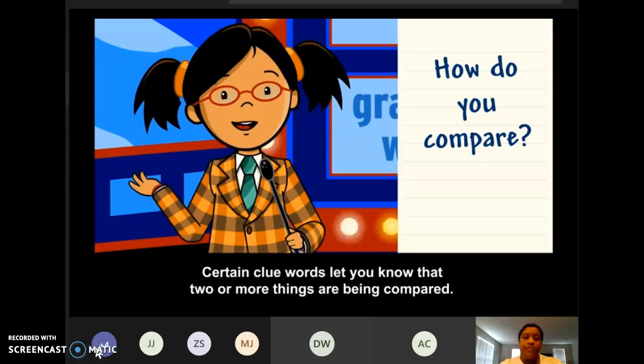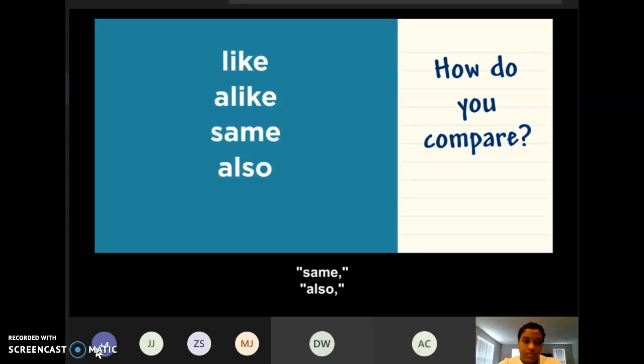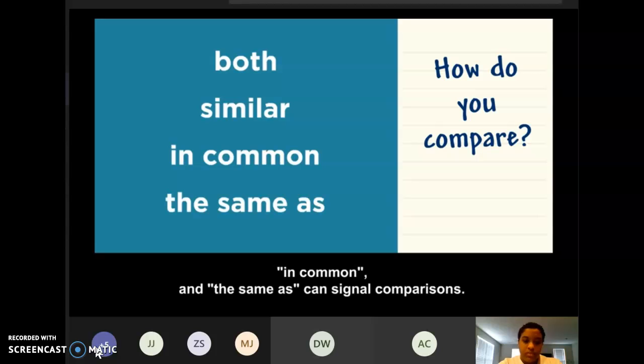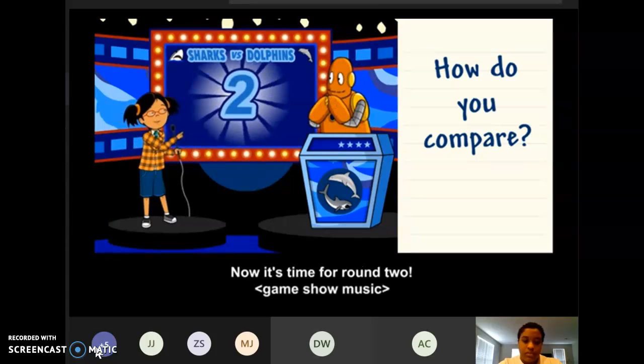Certain clue words let you know that two or more things are being compared. The words like, alike, same, also, to, both, similar, in common, and the same as can signal comparisons. Now it's time for round two.